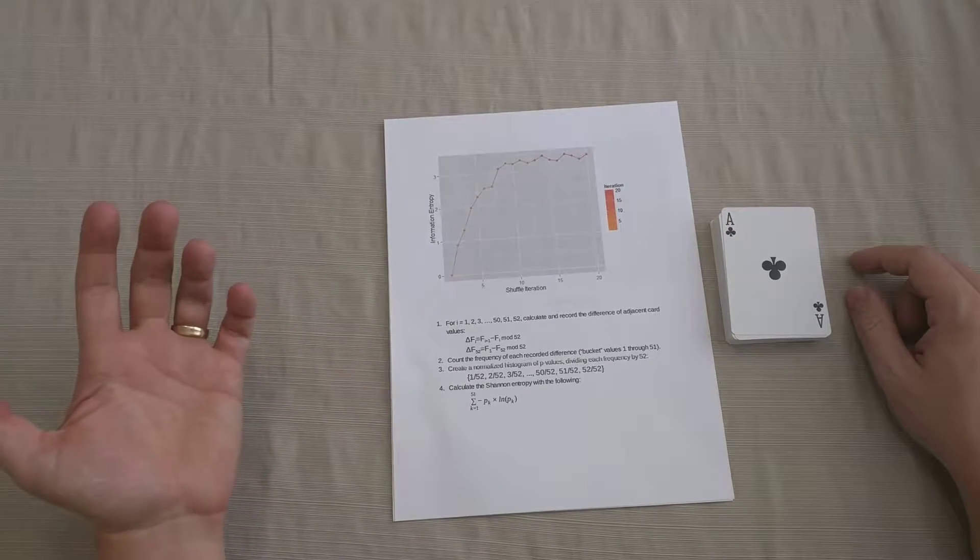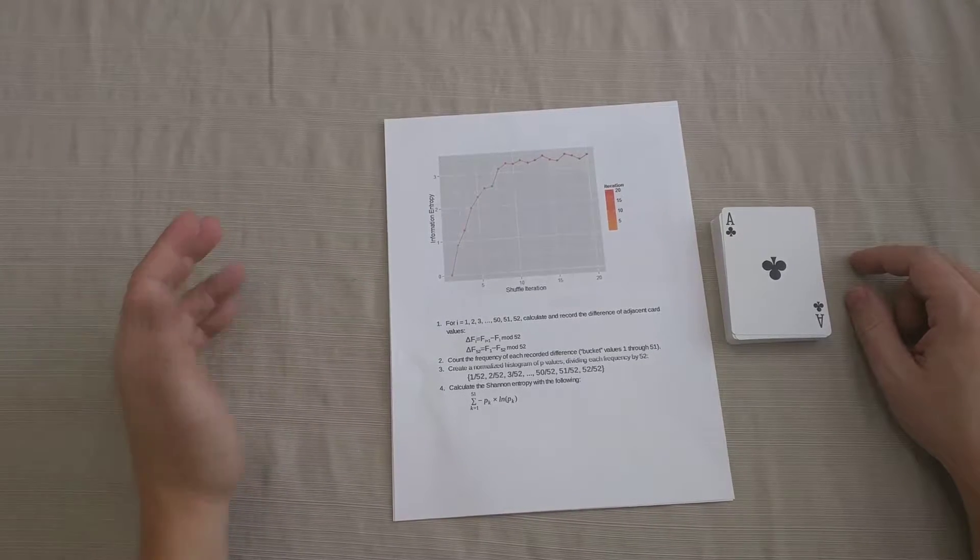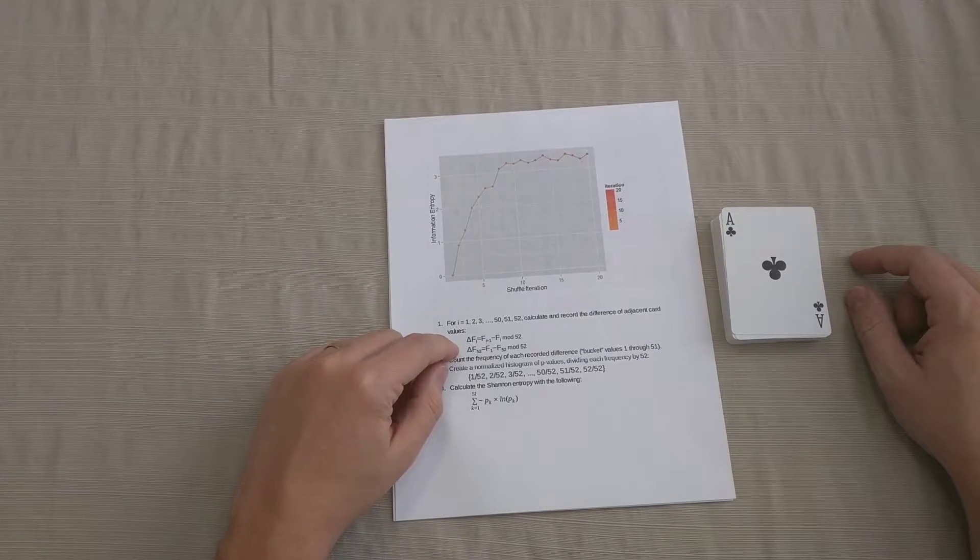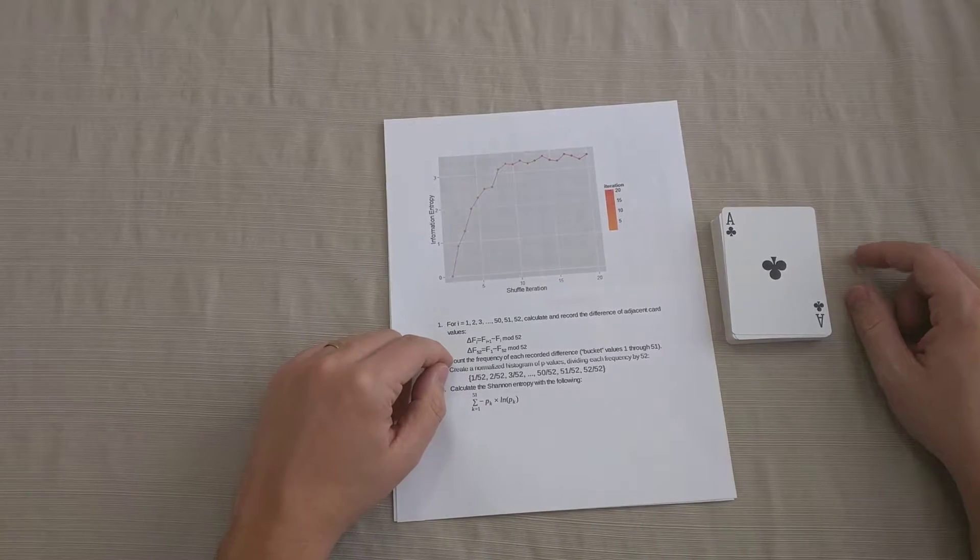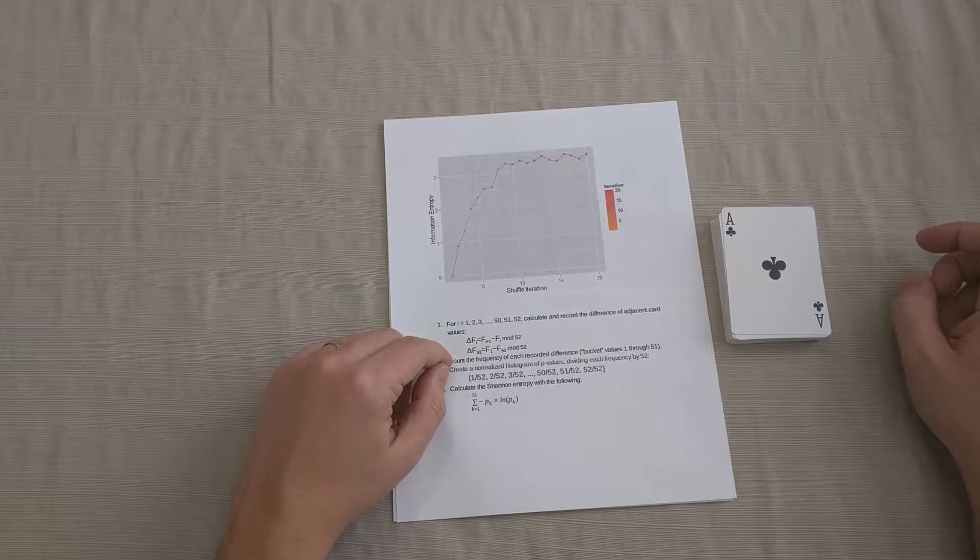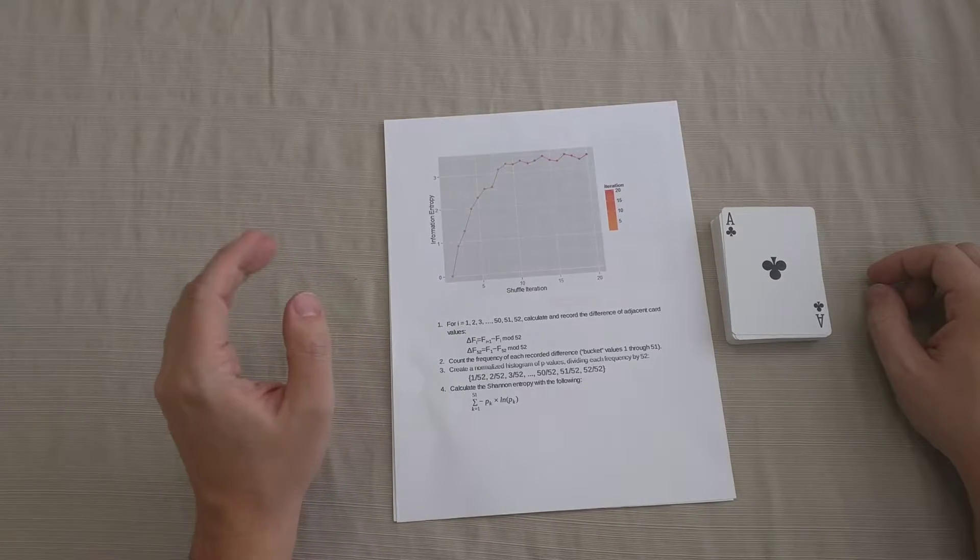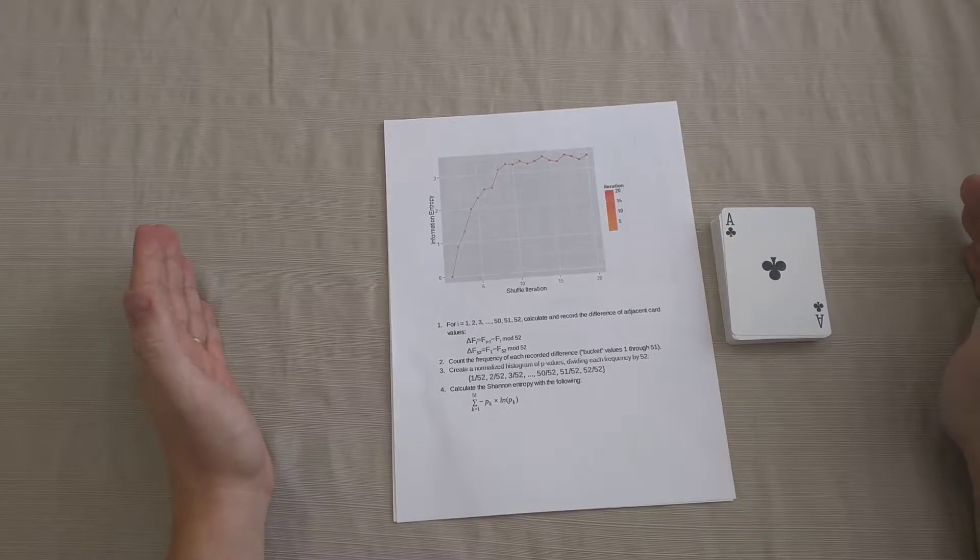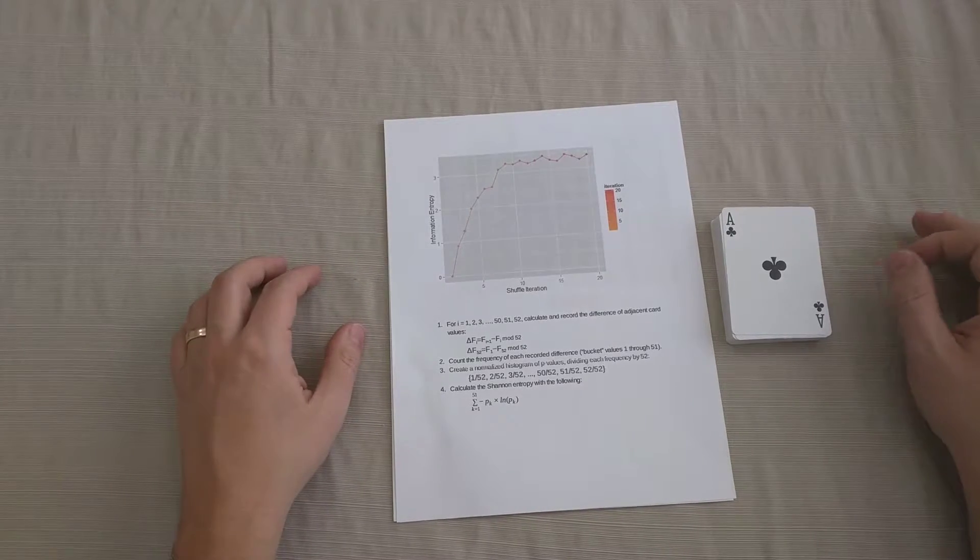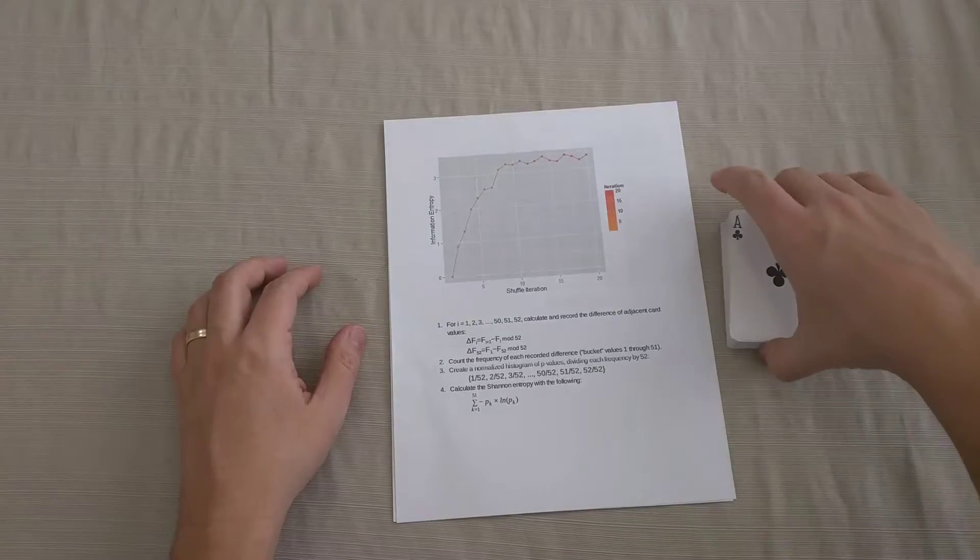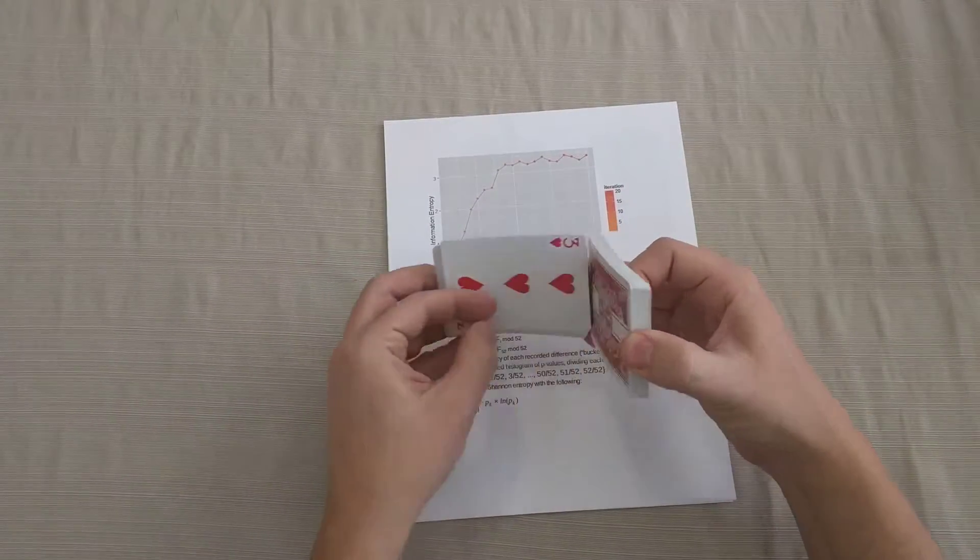So modular arithmetic is just a way to reset your counting after a maximum value. So for our cards, our maximum value is 52. So I'm going to take the difference of two adjacent cards and then bring them back into the range of values of 1 through 52. And this will be done just by adding 52 to that value if it's a negative value. So let's go ahead and shuffle the deck a few times and see how this works in practice.